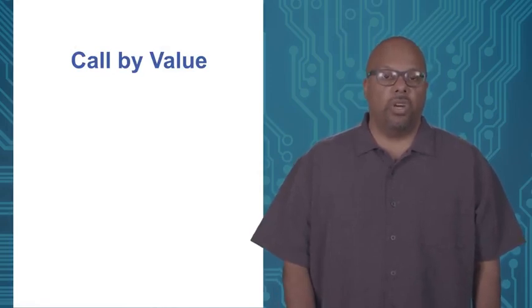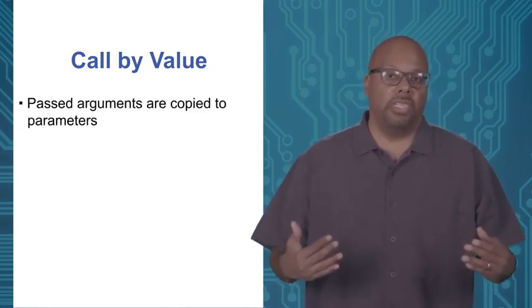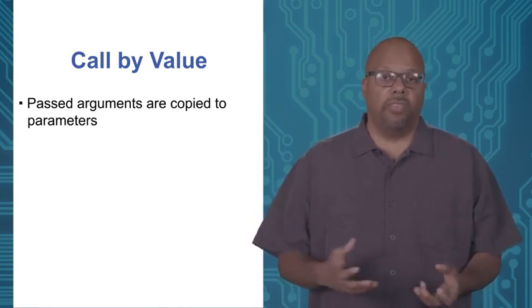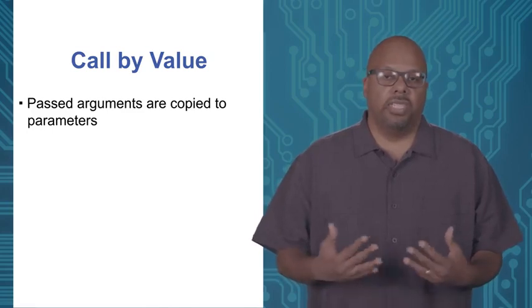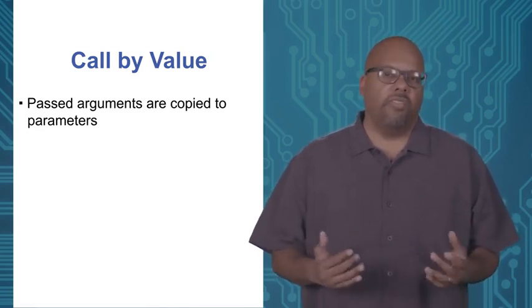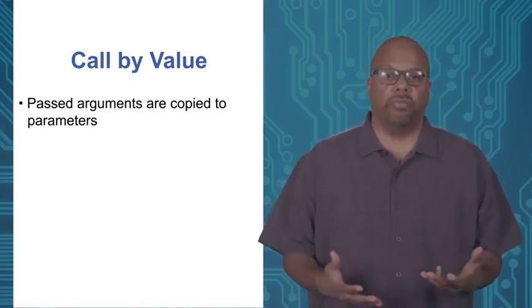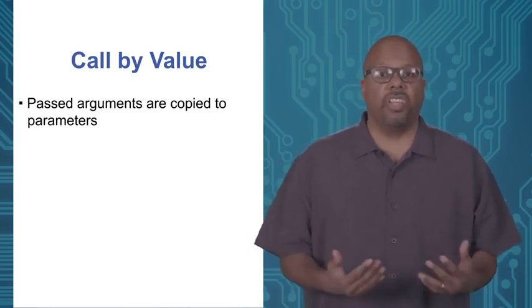Call by value describes how arguments are passed to parameters during a function call. Different languages can pass arguments in different ways — call by value is how it's done in Go. What call by value means is that the arguments passed as parameters are copied to the parameters. The data that the function uses is a copy of the original, not the original itself. That means the called function can't interfere with the original variables in the calling function — modifying parameters has no effect on the calling function.